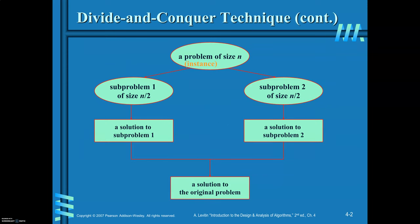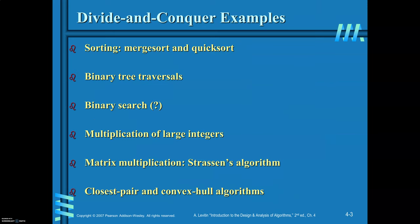Now we'll write the flowchart. Some examples of divide and conquer include: merge sort, binary tree traversal, binary search, multiplication of large integers, Strassen's algorithm for matrix multiplication, and the closest pair and convex hull algorithms.